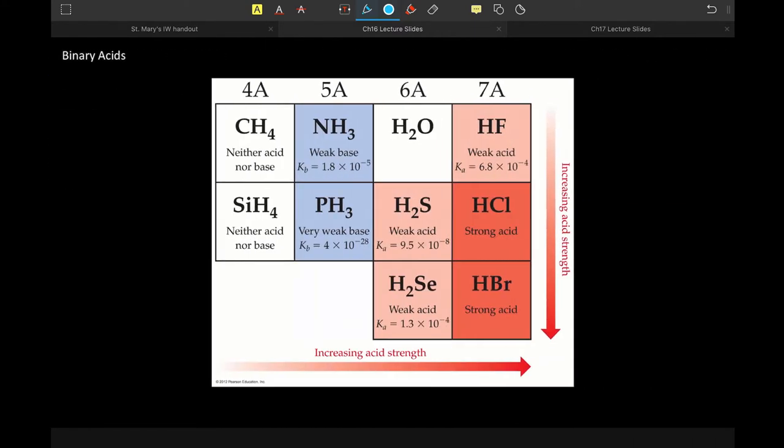So for binary acids—this is that figure from your book—as we go down a group for a binary acid, and when we say binary, we mean it's only composed of two elements, just to make sure we're all on the same page here. Acid strength increases this way, and the primary factor here is going to be your bond strength.